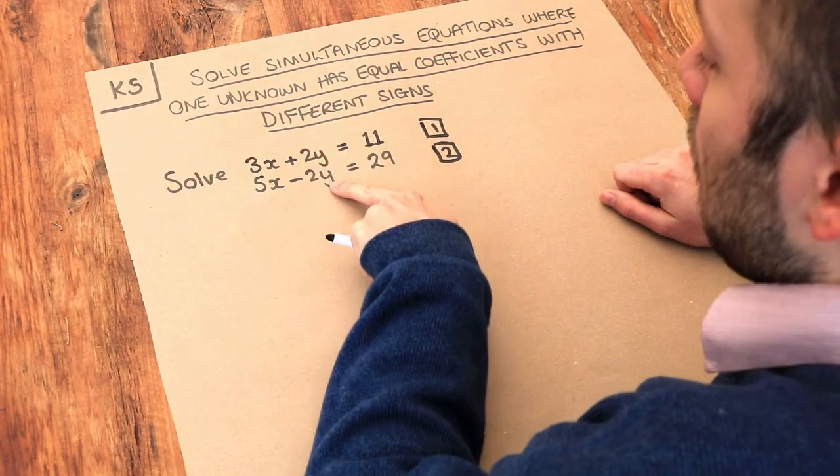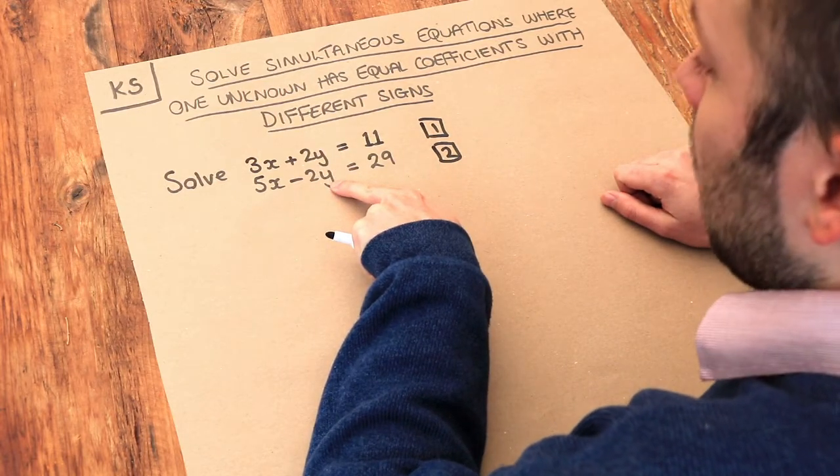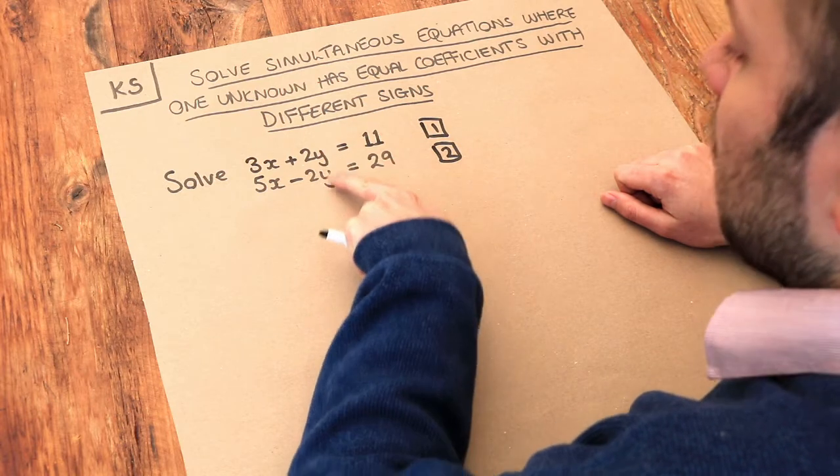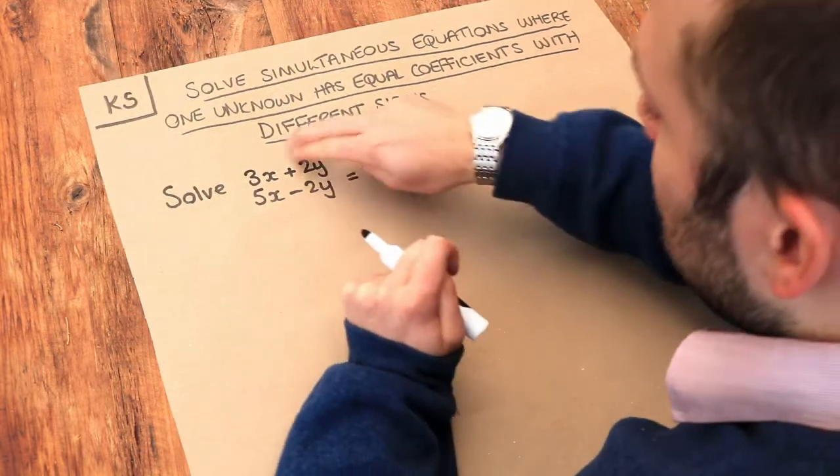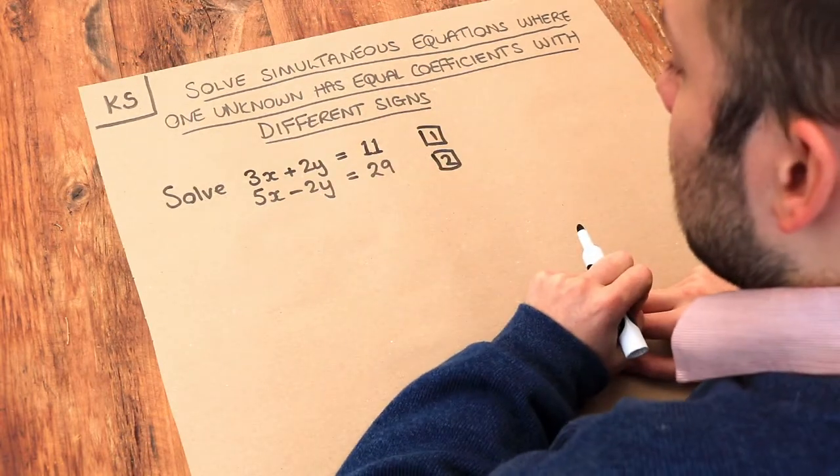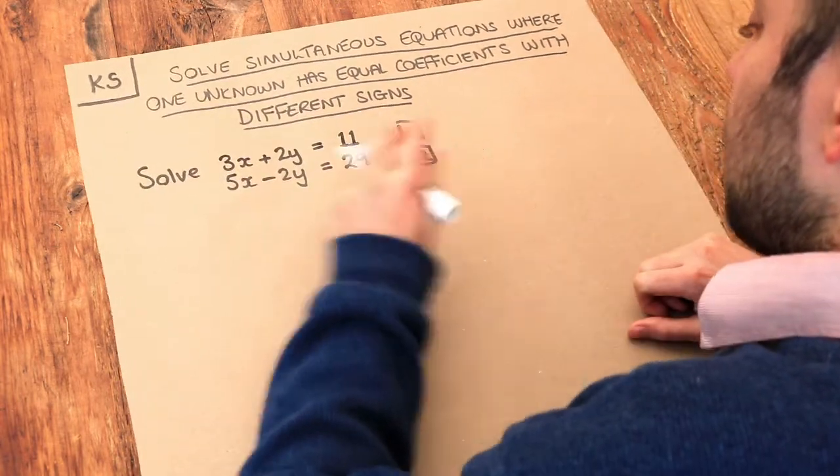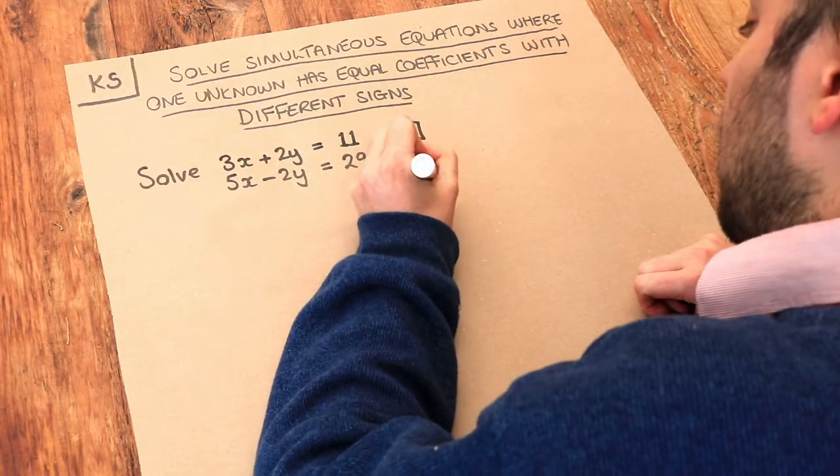then when we do the 2y minus the negative 2y, well 2y minus minus 2y, that would be 4y. But we want this y term here to disappear, to cancel. So if the signs are different this time, we're going to add them.